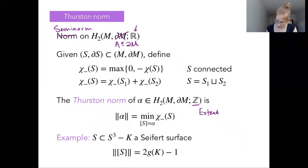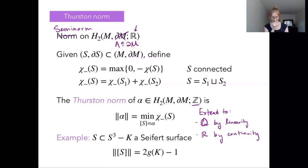So this gives us a measure of complexity for any surface in our three manifold. And we define the Thurston norm of a homology class to be the simplest representative of a surface in this homology class. So we're minimizing over all representatives of our homology class. We're minimizing this chi minus complexity measure.